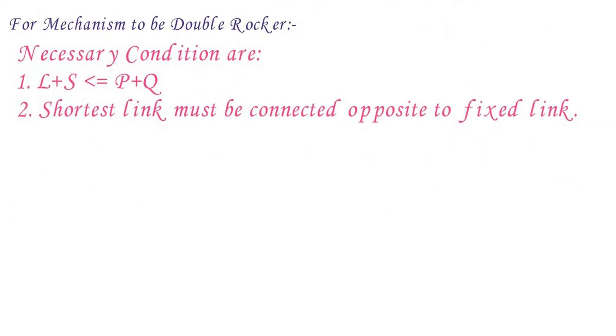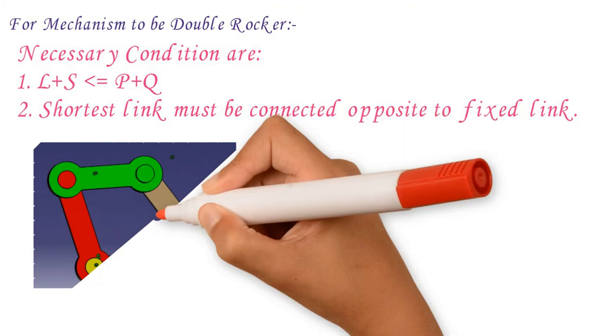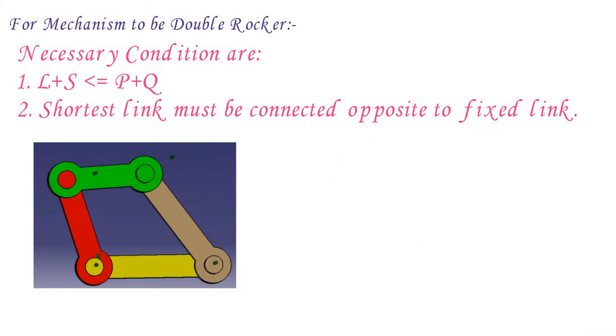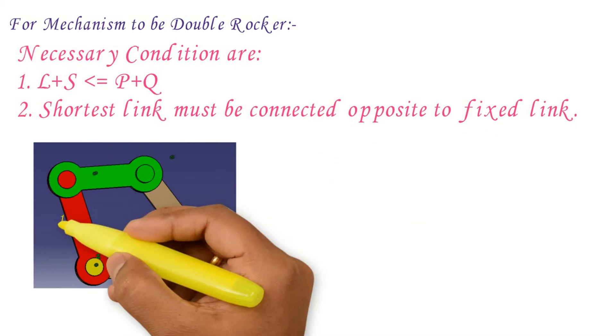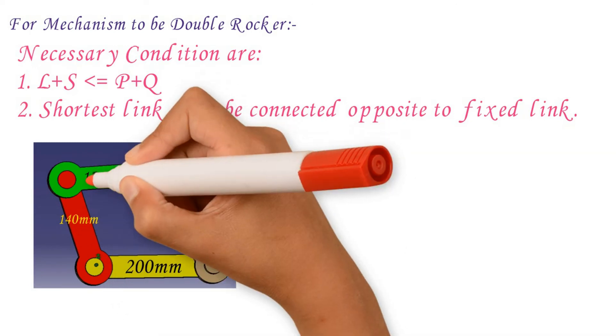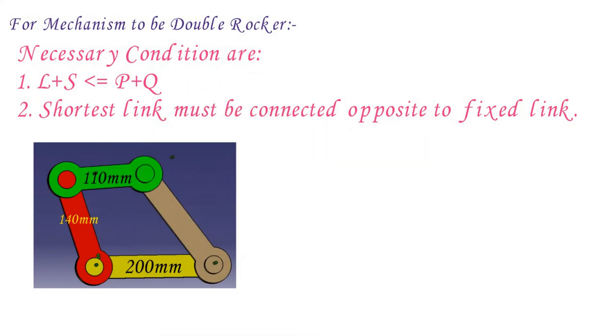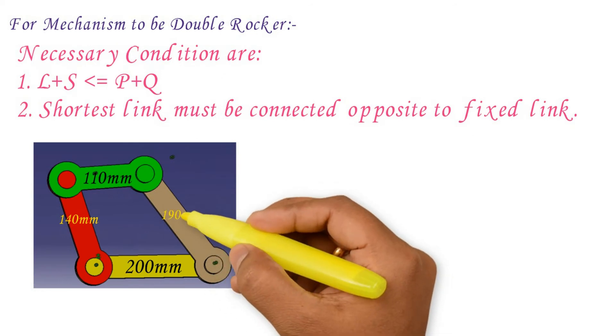For an example, see here fixed link length is 200mm, input link length is 140mm, coupler link length is 110mm, output link length is 190mm.